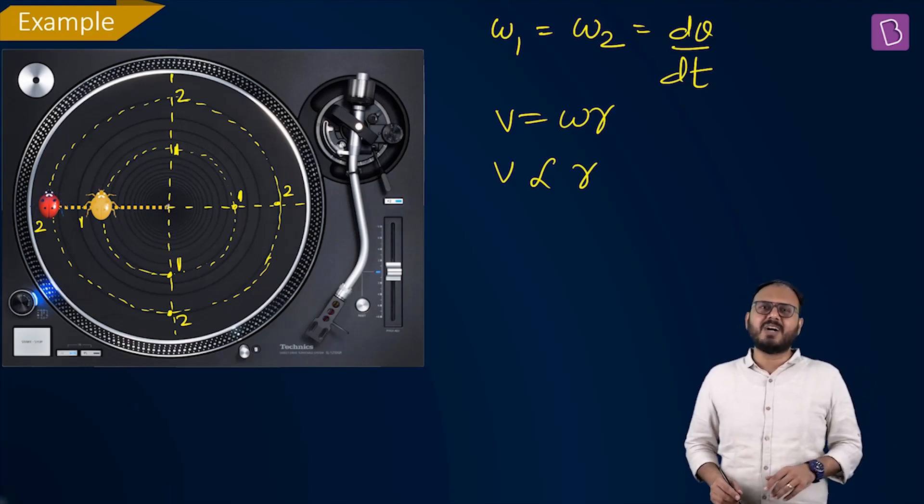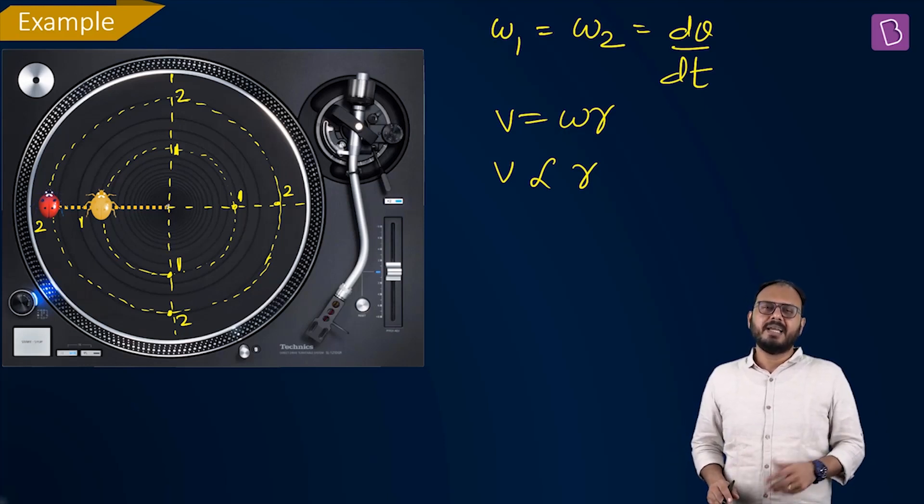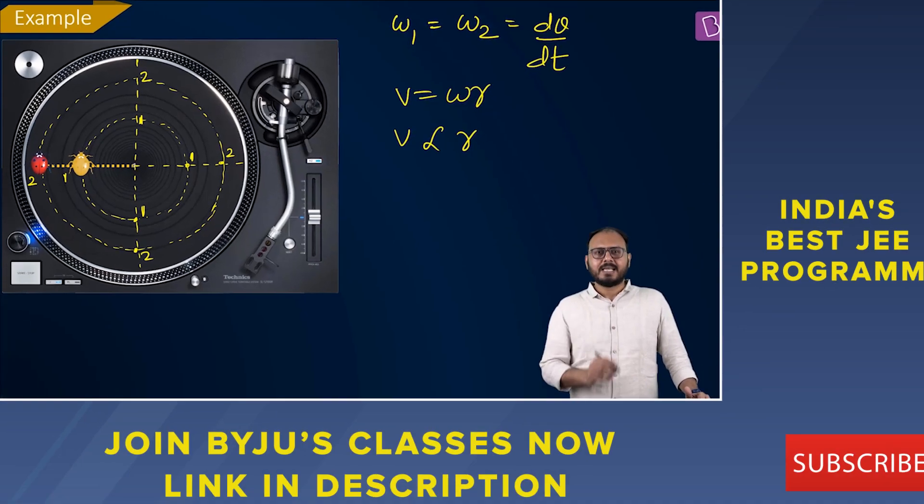So if you ask me who is faster, the red bug or the yellow bug, moving faster linear speed wise, the red bug. In fact, I'll give you a simple statement.